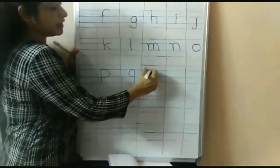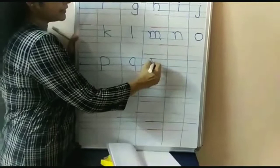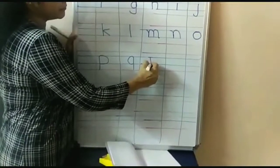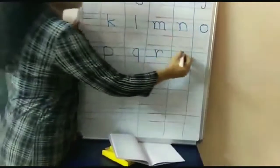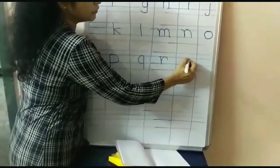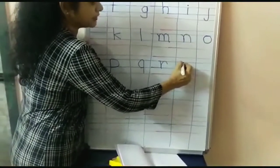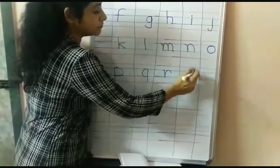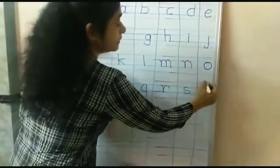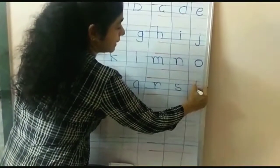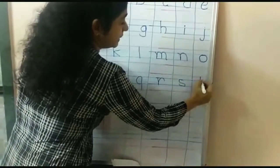We'll write R. Blue line to blue line. We'll write T. Make a standing line from red line to blue line, and a step — sleeping line.